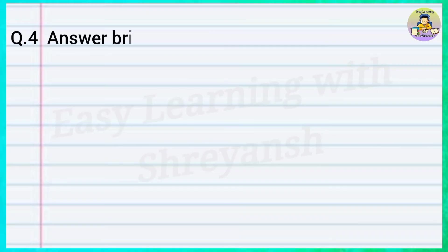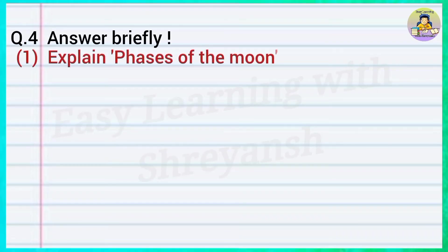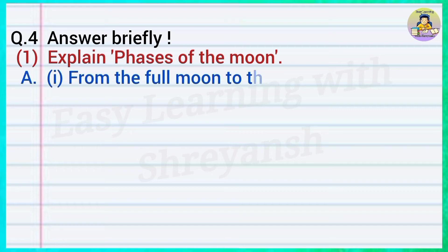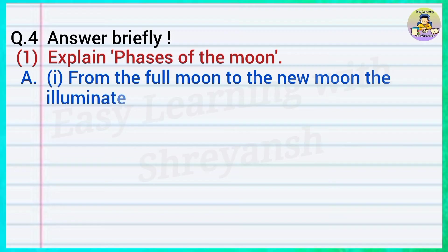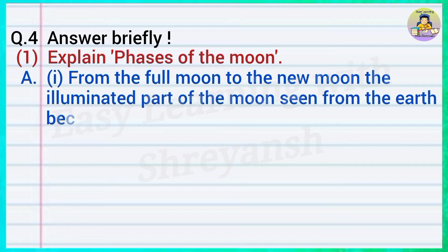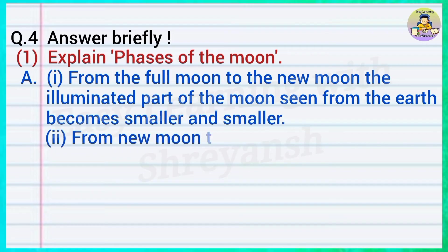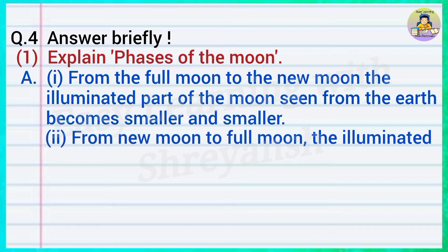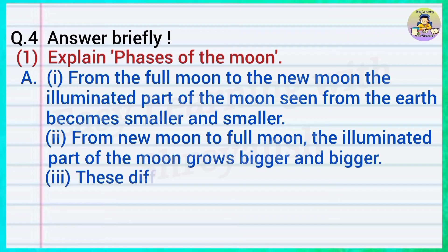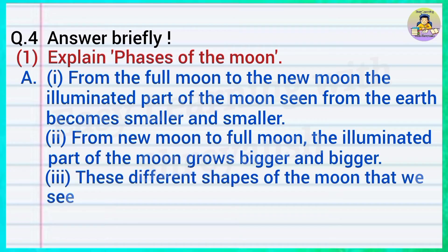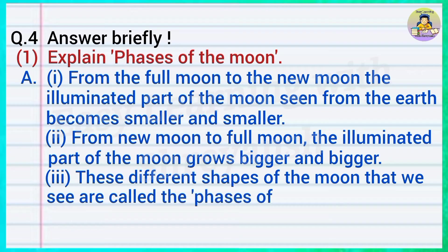Question number four, answer briefly: One — explain phases of the moon. Answer: From the full moon to the new moon, the illuminated part of the moon seen from the earth becomes smaller and smaller. From new moon to full moon, the illuminated part of the moon grows bigger and bigger. These different shapes of the moon that we see are called the phases of the moon.